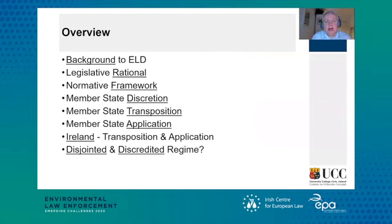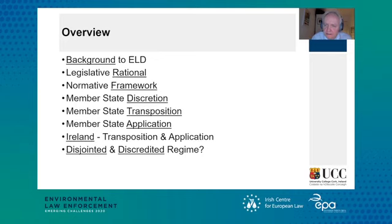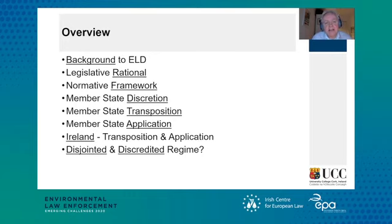So as an overview, I want to very briefly cover the background to the directive, its legislative rationale, the normative framework provided under the directive, and then to look at the member state discretion remaining to member states in terms of its transposition, to look at the history and experience of member state transposition and application, and then to address this question of whether it's a disjointed and discredited regime.